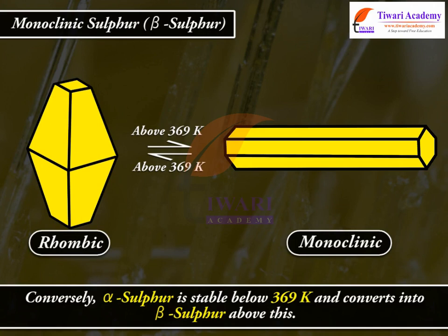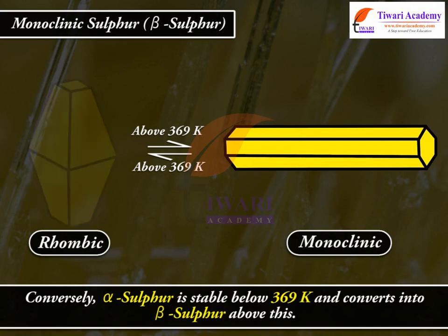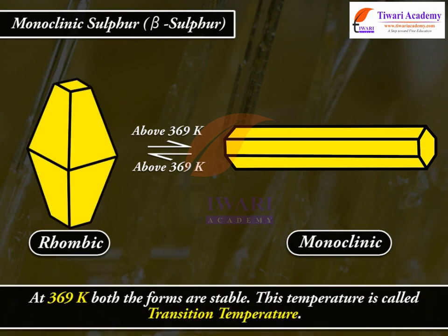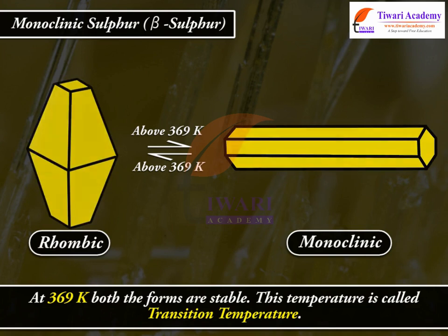Conversely, alpha sulphur is stable below 369 K and converts into beta sulphur above this. At 369 K, both forms are stable. This temperature is called the transition temperature.